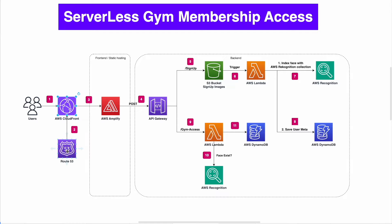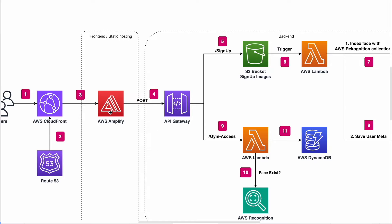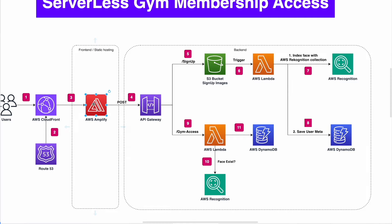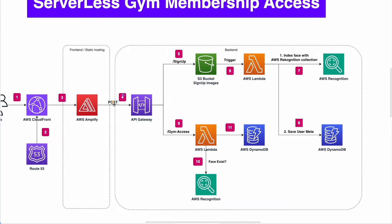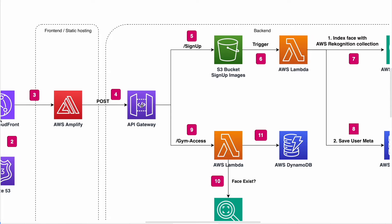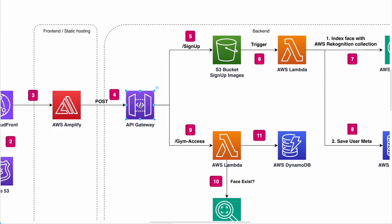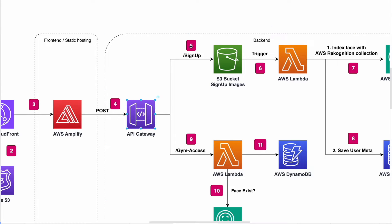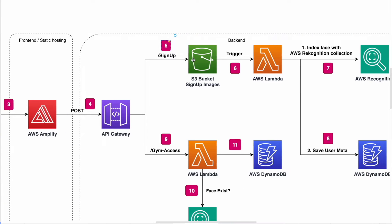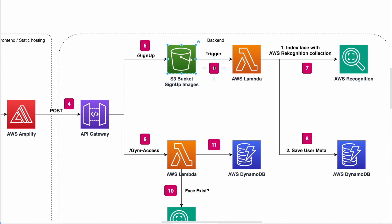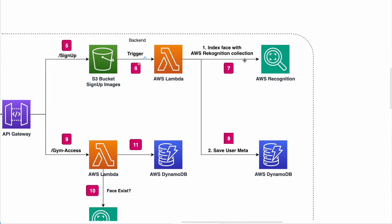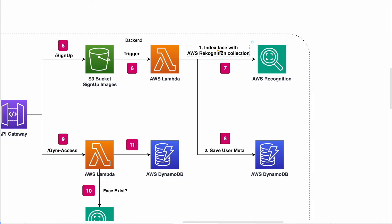Step one: the user reaches our front-end via AWS CloudFront and Route 53 — CloudFront is a caching CDN and Route 53 is our domain registrar. The front-end sits on AWS Amplify, which lets us make POST requests to API Gateway. The first POST option is sign-up: a manager uploads a picture of the gym member, which is stored in an S3 bucket, and that upload triggers an AWS Lambda function.